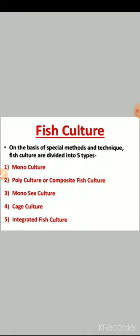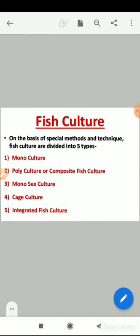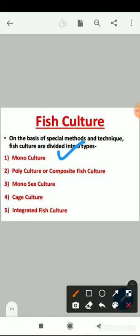On the basis of special methods and techniques, fish cultures are divided into five types. Similar to the culturing of crops, here also we are going to culture the fishes for commercial purpose. The five major types are: monoculture, polyculture or composite fish culture, monosex culture, cage culture, and integrated fish culture.